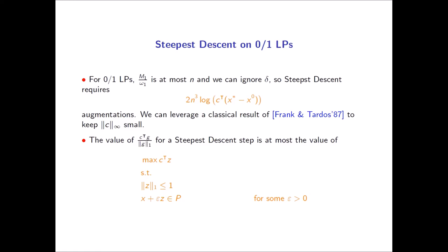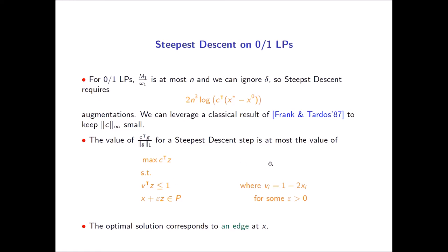For zero-one polytopes at a vertex, the entire feasible cone is contained within a single orthant of space, since every entry of x is either zero — its minimum — or one — its maximum. The one-norm ball of radius one has exponentially many constraints, one per orthant, but we conclude we can model this criterion by taking just one of those constraints: replacing the one-norm of z ≤ 1 with v^T z ≤ 1, where v_i = 1 - 2x_i, so v_i = 1 if x_i = 0 and v_i = -1 if x_i = 1.